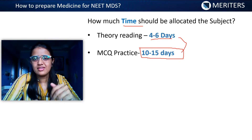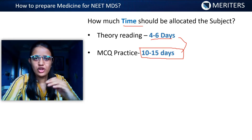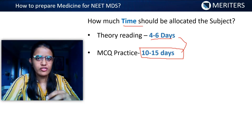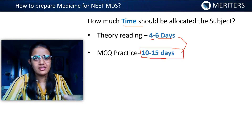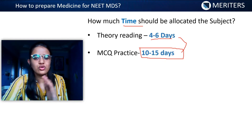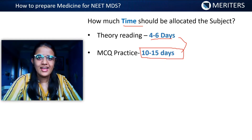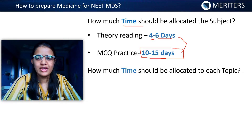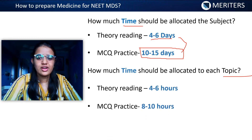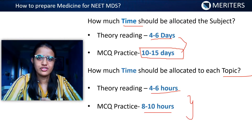General medicine is a volatile subject. So if you want to take any breaks in between — study general medicine for a week, then start some other subject, then come back — that's also fine. In your entire course, you can spend around 10 to 15 days for general medicine. For each topic-wise distribution, you can give around 4 to 6 hours of theory reading and around 8 to 10 hours of MCQ practice. This is everything for your first reading.